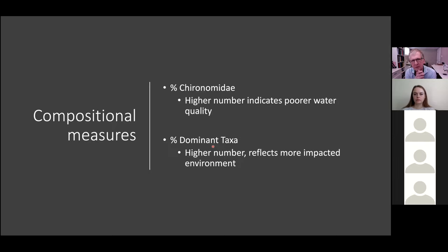Compositional measures, we need to deal with. These are very good, useful metrics. Percent chironomids - the higher number, typically chironomids are thought to be very tolerant of organic pollutants. Whether it's increased silting, any sort of eutrophication, lower oxygen content, chironomids can handle it. Generally thought, a higher number indicates poorer water quality. Percent dominant taxa is useful - the higher the number reflects a more impacted environment because it indicates something very specific is thriving to the exclusion of a more spread out fauna.